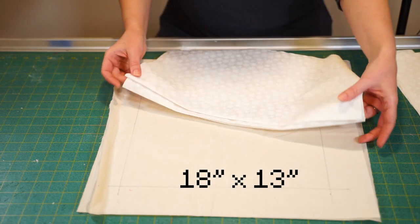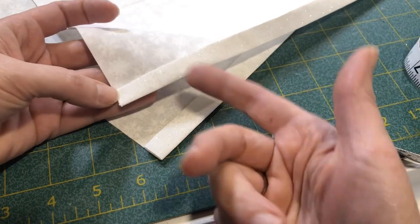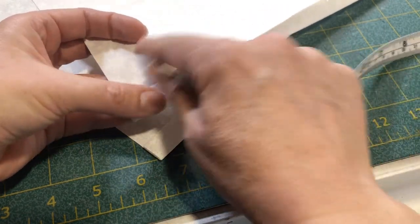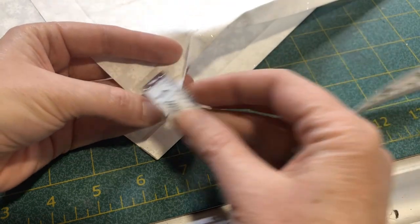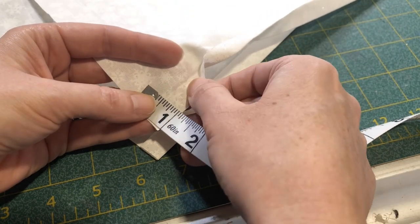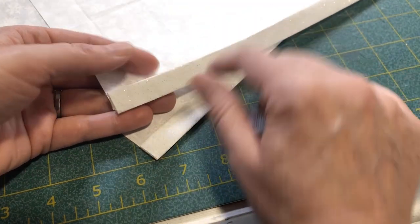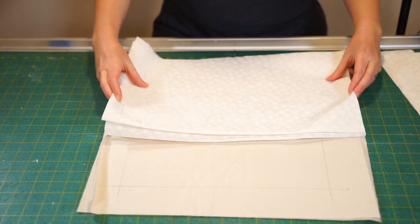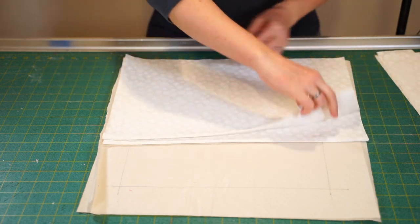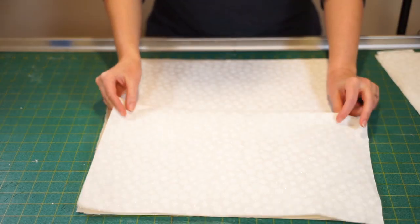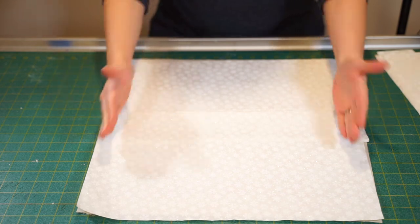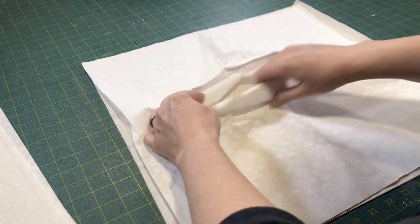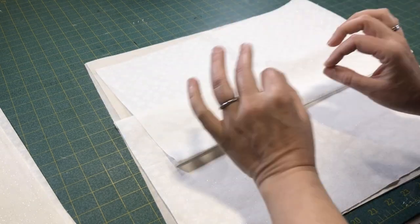For the back of the pillow, I'm using a simple no zipper method. So I've gone ahead and folded and pressed the raw edges of my opening. It's a half inch, folded in twice and then I'll stitch it closed. These hemmed pieces will overlap, sew them all down and then I'll be able to stick the pillowcase in through the flaps here. So simple.